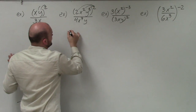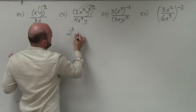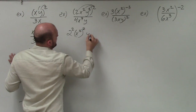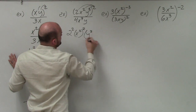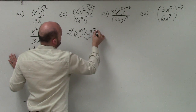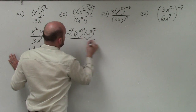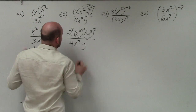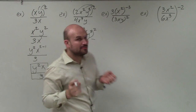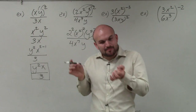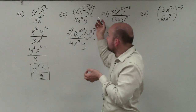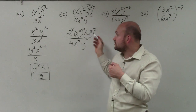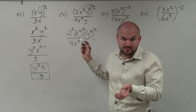In doing that, I now have 2 squared, x squared squared, and y cubed squared, all over 4x to the seventh y. It's very important when applying the power to product rule that you distribute that power to every single term that's multiplying inside those parentheses.